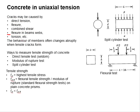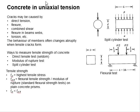The behavior of the member often changes abruptly when tensile cracks form. In general, concrete without tension performs the best. Upon occurrence of the first crack, the stiffness of the concrete will be affected. With the existence of reinforcement, all the tensile stress will be taken by the tension reinforcement. In the case that there is no reinforcement in the concrete, the concrete member usually fails.